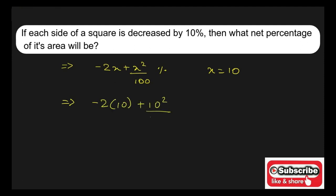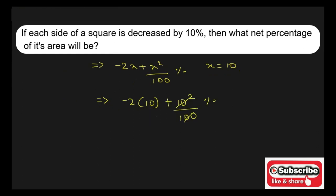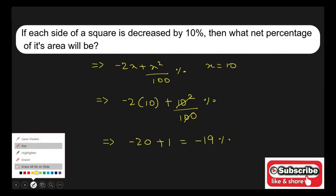square upon 100 percent. Now this 10 square and 100 got cancelled, it will become -20 plus 1, which gives you the answer -19 percent. Since the answer is negative, there will be a net decrease in area of the square.